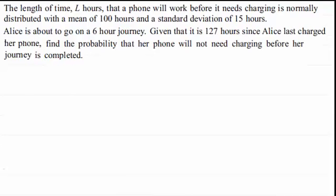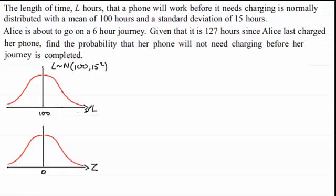Okay, now when we start, let's just draw up our curve for the length of time L hours that a phone will work before it needs charging. We know that it's normally distributed with a mean of a hundred and fifteen. Now we're given that it's 127 hours since Alice last charged her phone, so if I mark in that 127 hours there. Then if Alice is about to go on a journey, a six-hour journey, then if we add six hours to that, that's going to bring us up to a hundred and thirty-three hours.